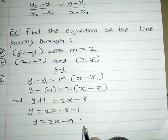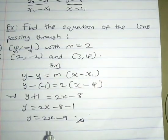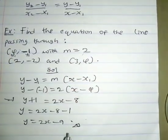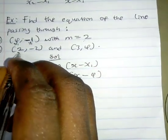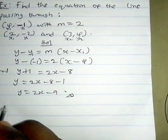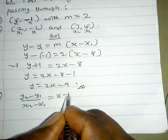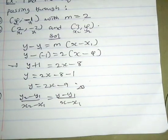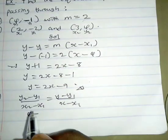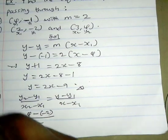For the second part we have points (2, -2) and (3, 4). We are going to apply the second formula. Let x1 = 2, y1 = -2, x2 = 3, y2 = 4. So we have (y2 minus y1) over (x2 minus x1) equals (y minus y1) over (x minus x1). That gives (4 minus (-2)) over (3 minus 2) equals (y minus (-2)) over (x minus 2).